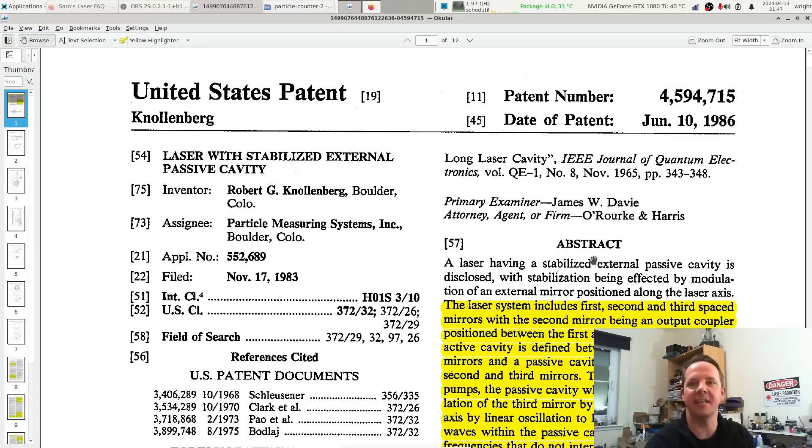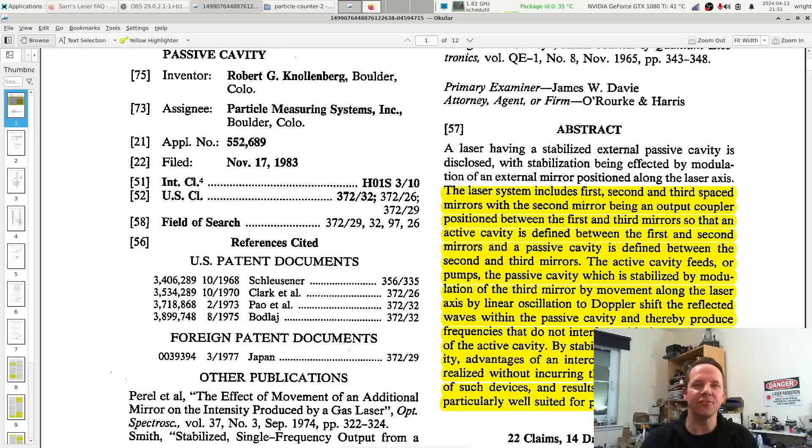So let's take a look at the patent. Here it is—this was granted on 10th of June 1986 and was filed on November 17, 1983 by Particle Measuring Systems, Boulder, Colorado. I've highlighted all of the relevant parts in here, so let's have a quick look. I'll link this patent down below for anybody that really wants to read it.